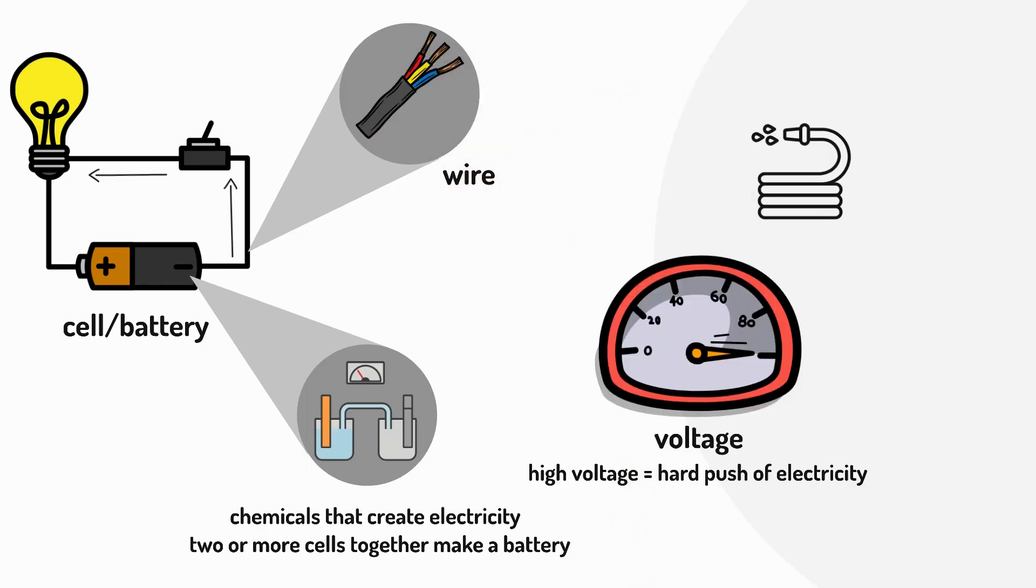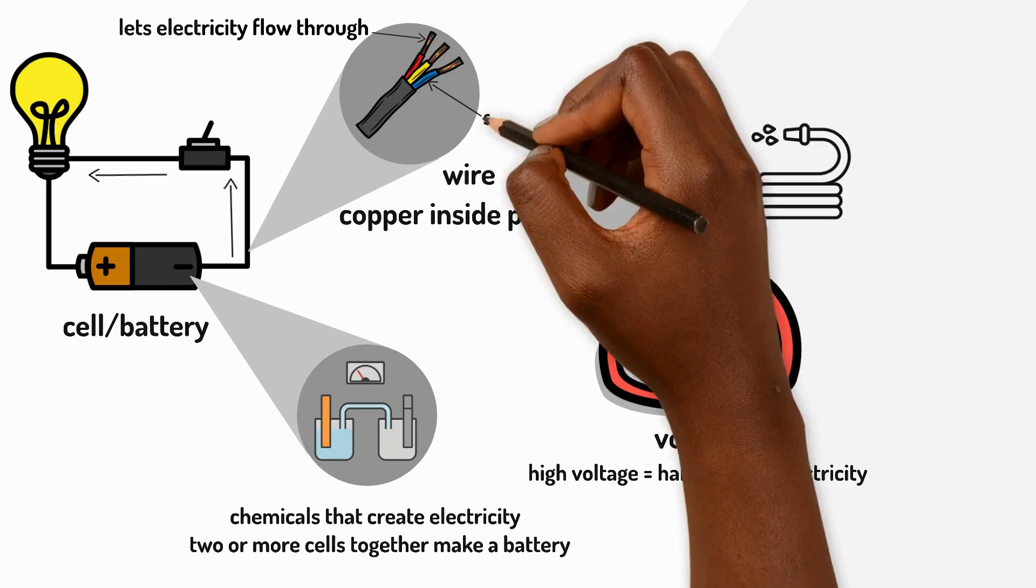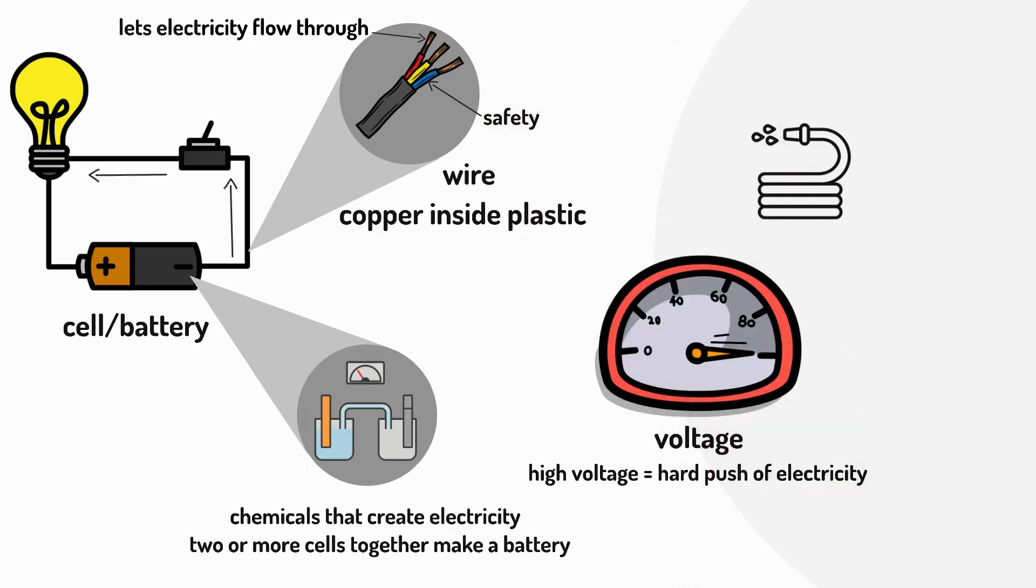Wires connect the different parts of a circuit. They're made of metal, usually copper, inside a plastic covering. The metal lets electricity flow through it while the plastic keeps the electricity safe inside.